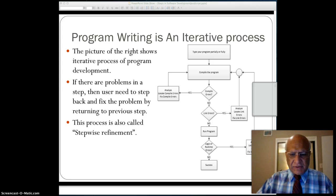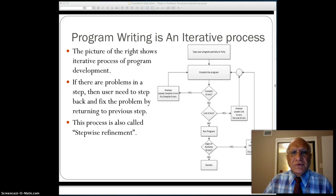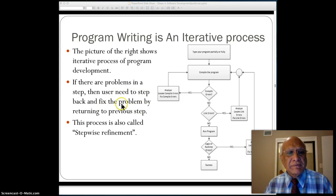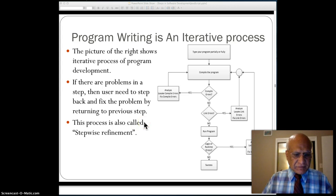So this picture whose details I showed you shows that program writing is an iterative process. If there is a problem in a step, then the user - means you, the program writer - needs to step back and fix the problem by returning to the previous step. Computer scientists call this process stepwise refinement. You refine each step until you're done.